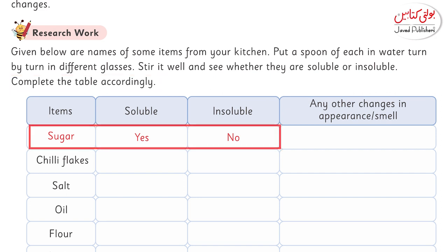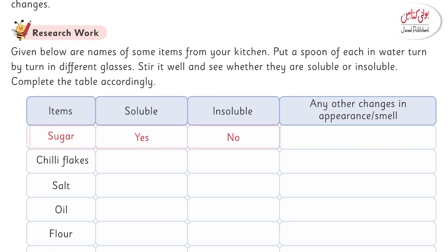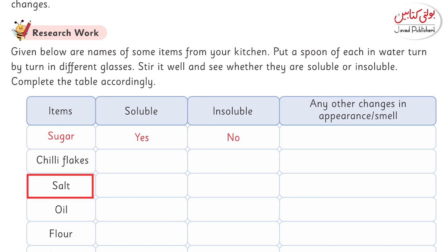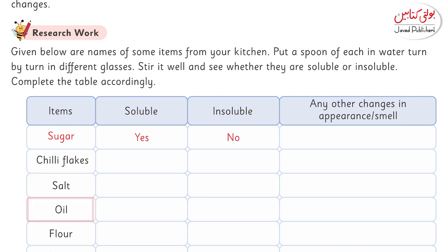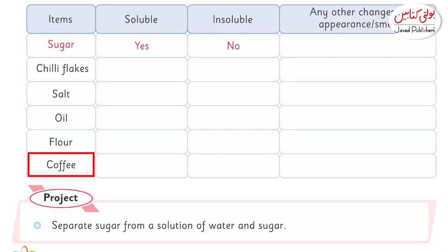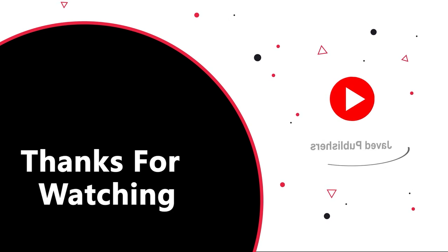Sugar: soluble yes, insoluble no, appearance — dissolved. Chili flakes: soluble no, insoluble yes, changes — floats on the surface. Salt: soluble yes, insoluble no, changes — dissolved completely. Oil: soluble no, insoluble yes — comes on the surface of the liquid. Flour: soluble no, insoluble yes — gives white color to the water. Coffee: soluble yes — changes the color of the water.